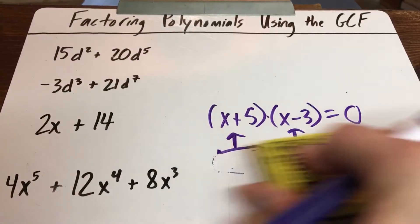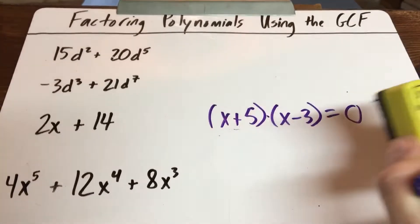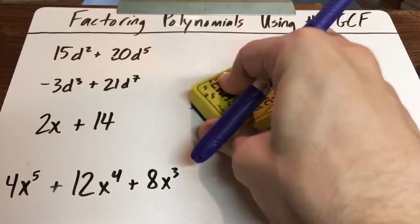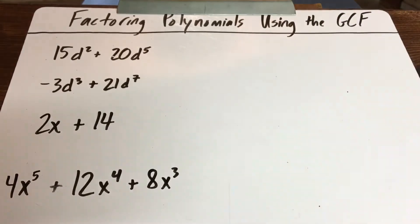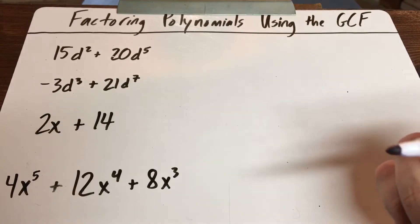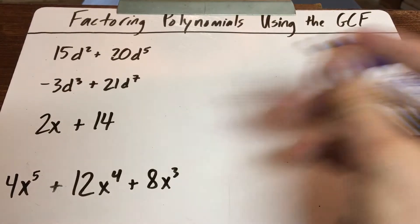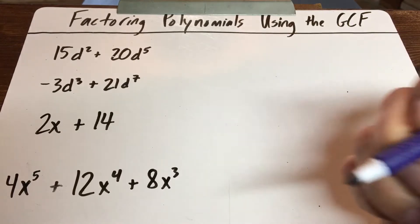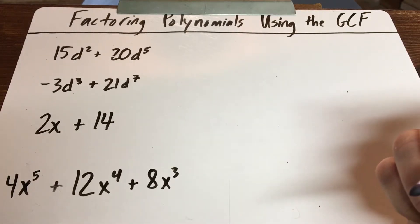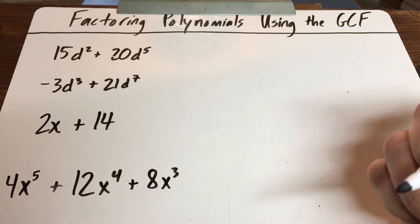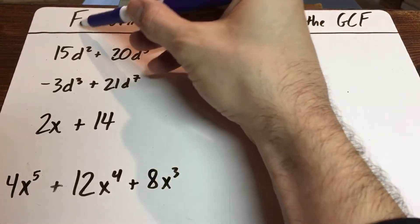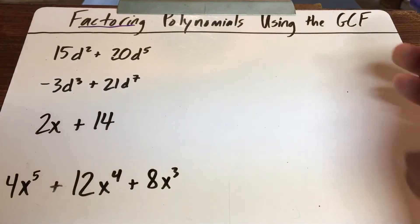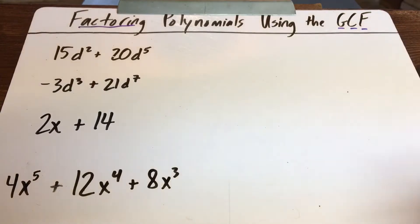That's how you solve them whenever they're written in factored form. But what if they're not written in factored form? What if they're in regular standard form? What we're going to have to do is factor them ourselves, and the way you do that is you use the greatest common factor, the GCF.